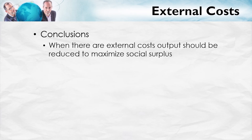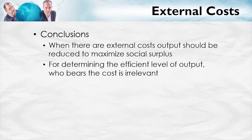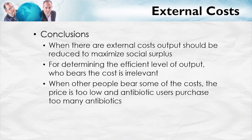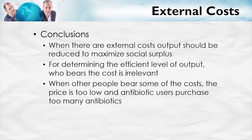What conclusions can we make? When there are external costs, output should be reduced to maximize social surplus. For determining the efficient level of output, who bears the cost is irrelevant — we want to take into account all costs, not just supplier costs. When other people bear some of the costs of production, the price is too low; not all costs are reflected in the price. As a result, the price is sending the wrong signal — it's incentivizing too much production.